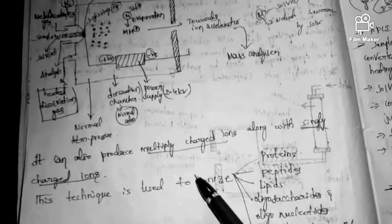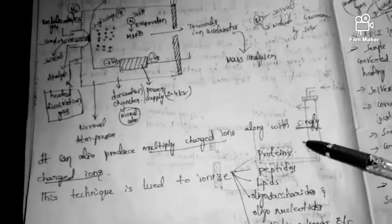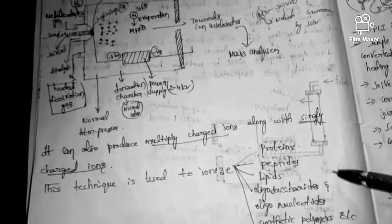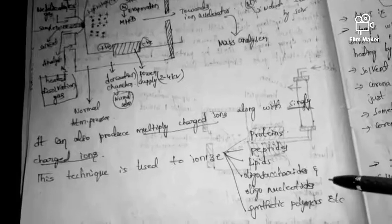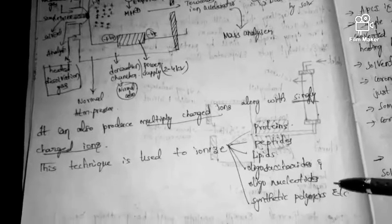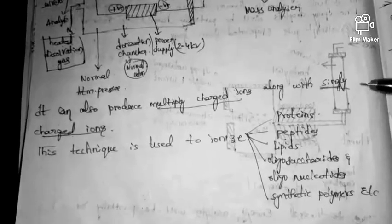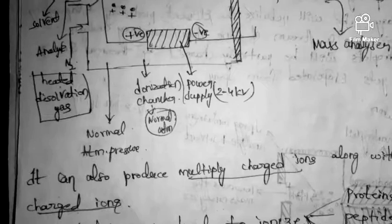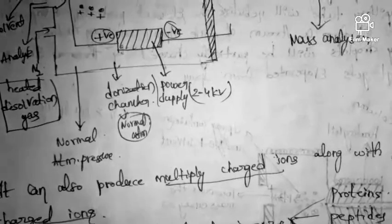This technique is used to ionize proteins, peptides, lipids, oligosaccharides, oligonucleotides, and synthetic polymers. There are a lot of advantages. I hope you understood this. Thank you.